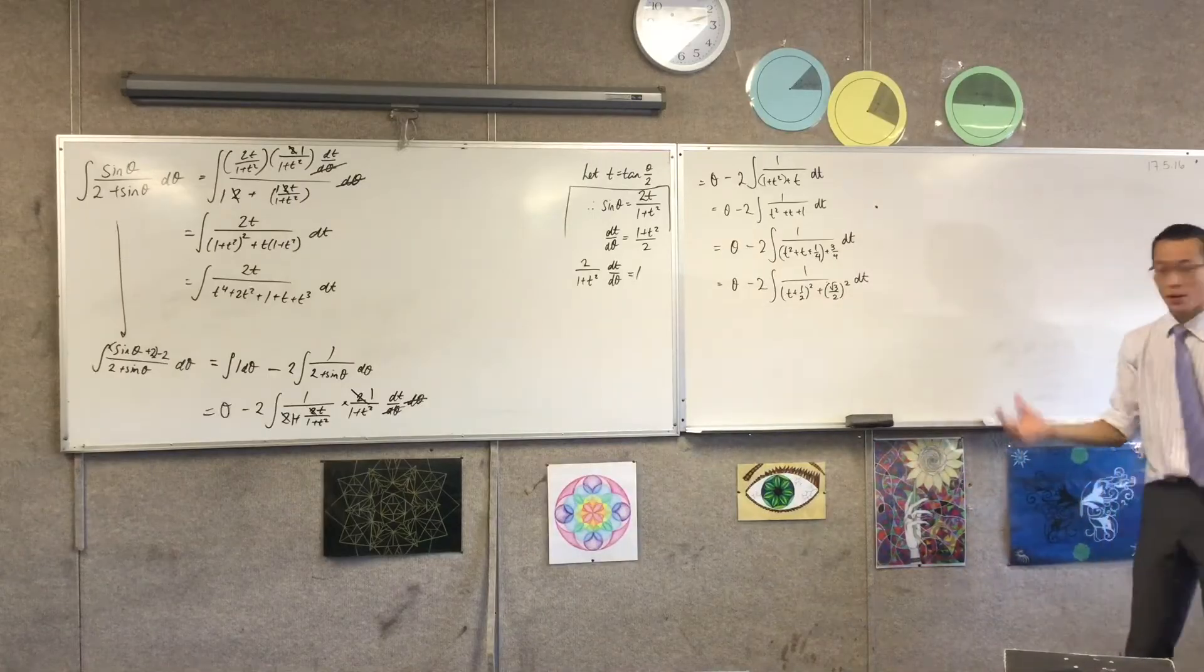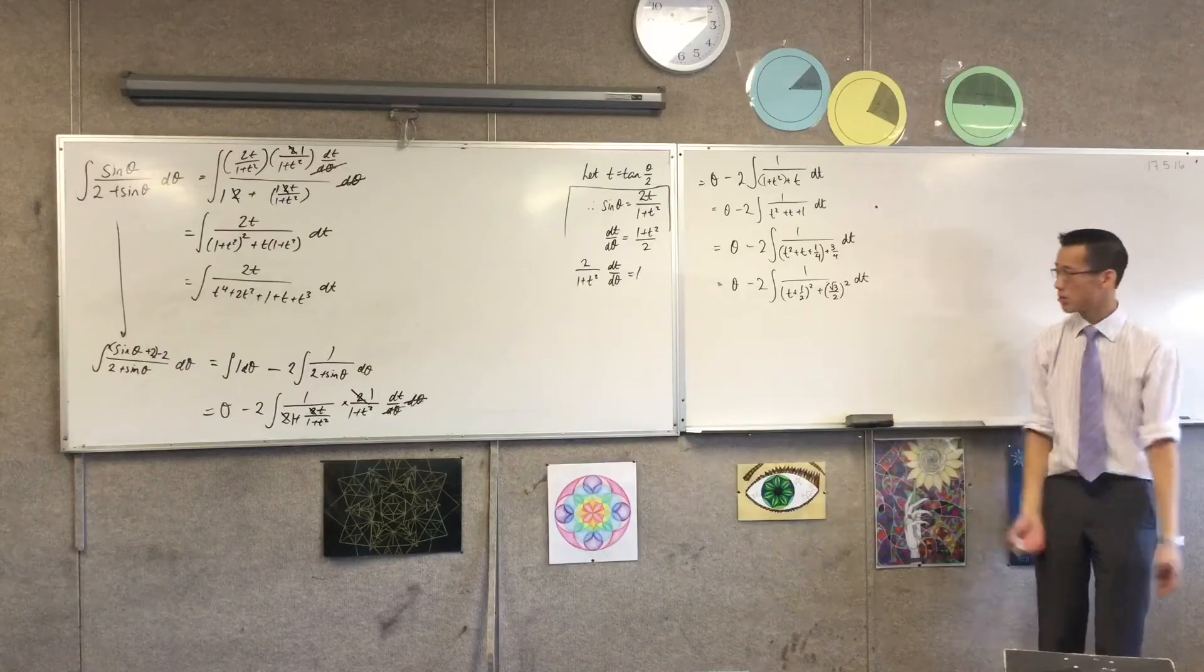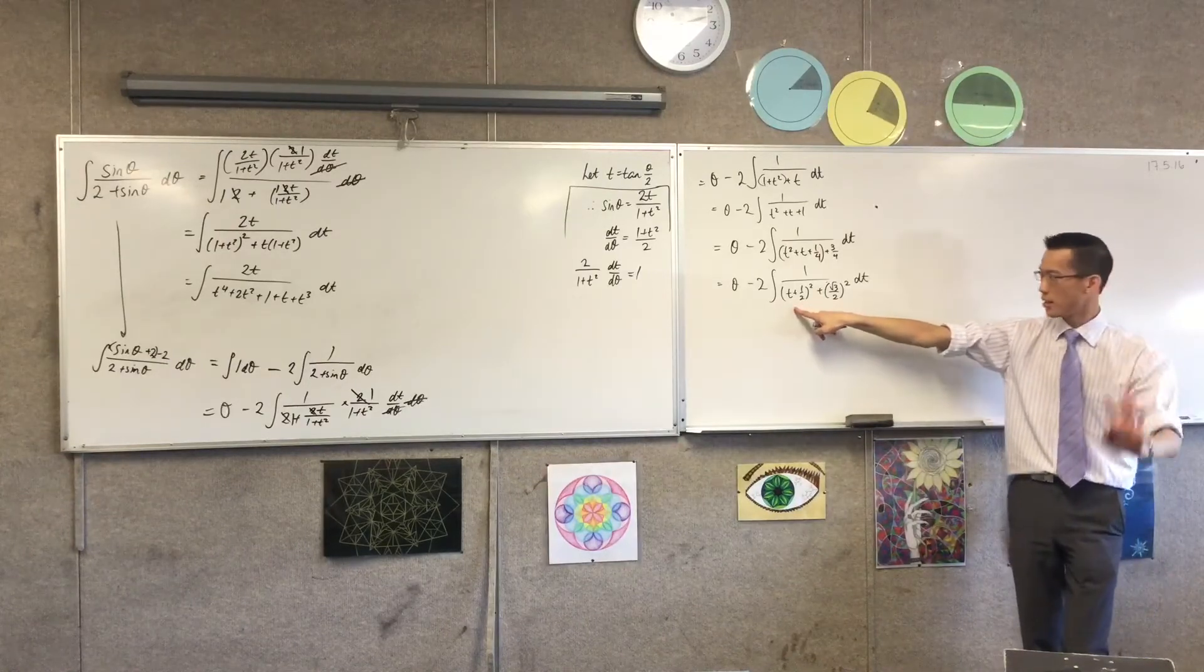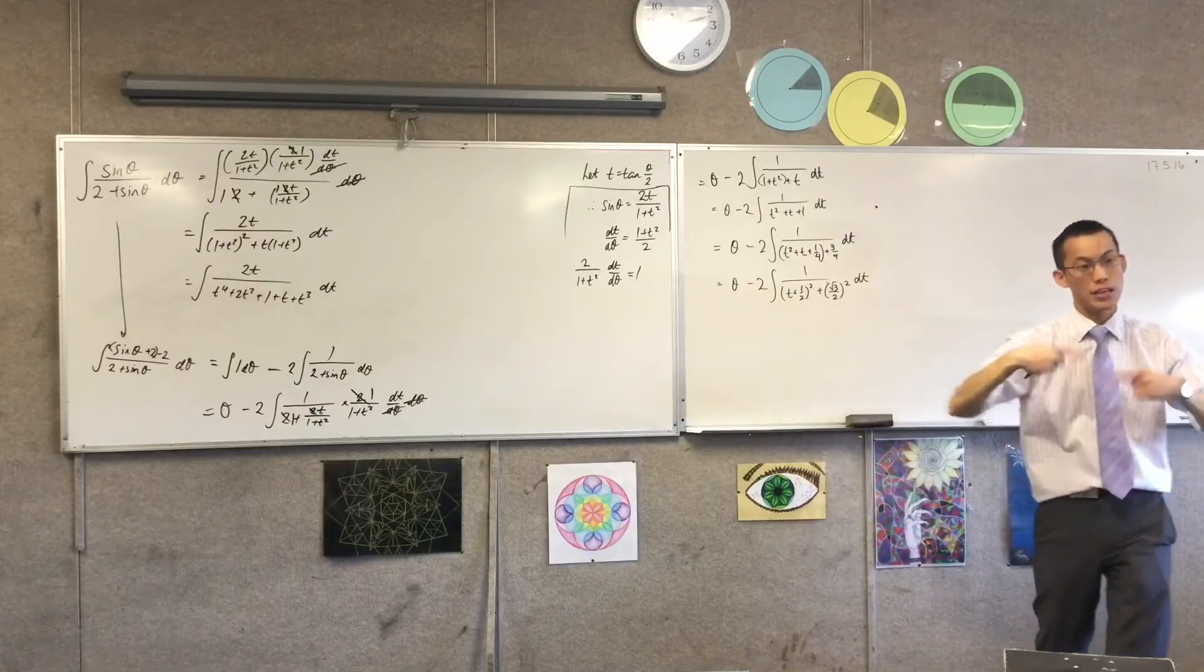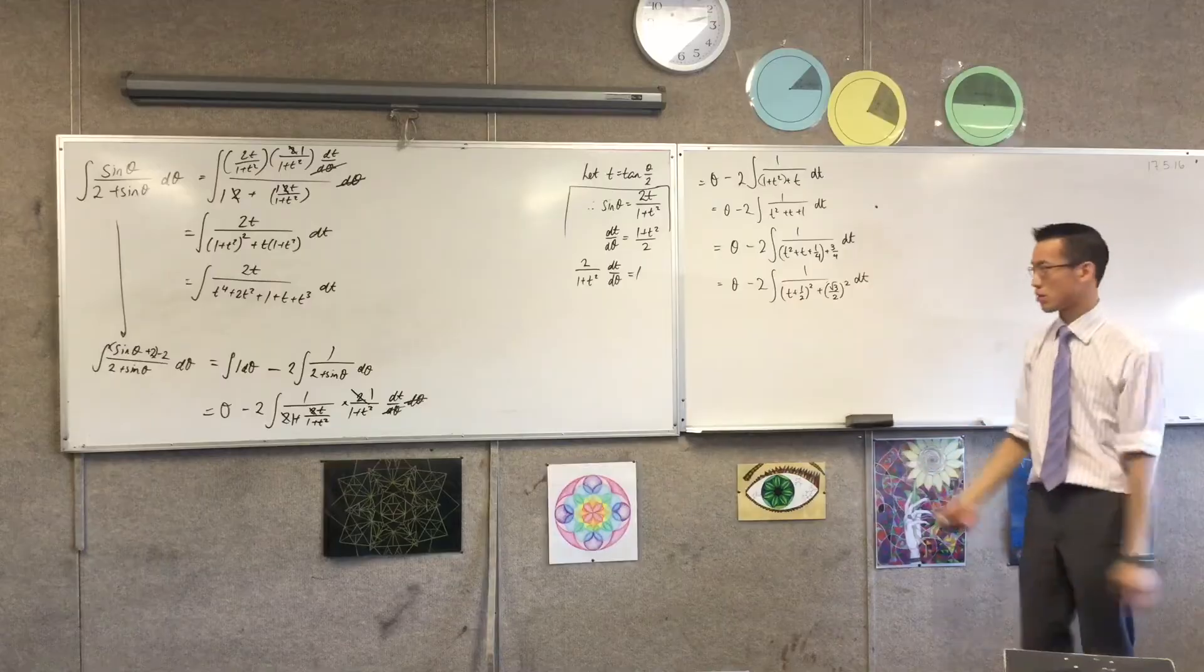Okay. Now, I could then go and say, okay, let u equal t plus a half, and then go ahead and do the substitution. But in this case, because my use of reverse chain rule is going to be nice, the coefficient there, the derivative of the inside, which I'm going to need for reverse chain rule, is just one. So I'm just going to just go for it, okay?